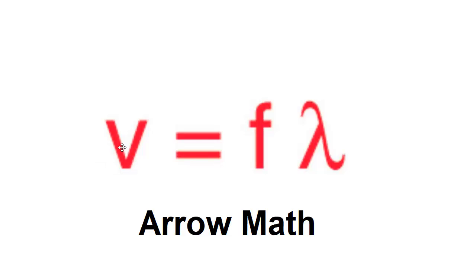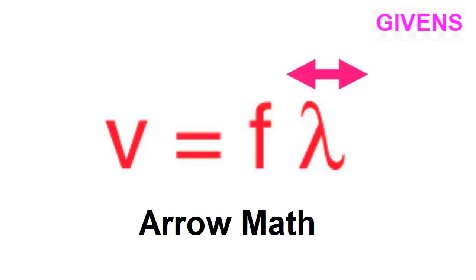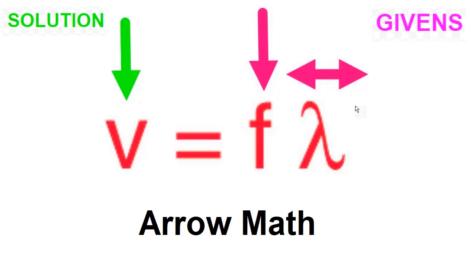This video is going to cover using the wave equation and introduce what I call arrow math. Arrow math is when you use arrows instead of solving with numbers. For example, if wavelength is constant, you make an arrow like that. If frequency goes down, you make an arrow for that, and then you try to solve what happens to speed — since this side is going down, speed has to go down too.